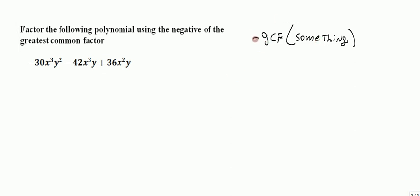In this case we're telling us to take out the negative of the GCF. This is always going to be the case whenever the leading term of the polynomial is negative.